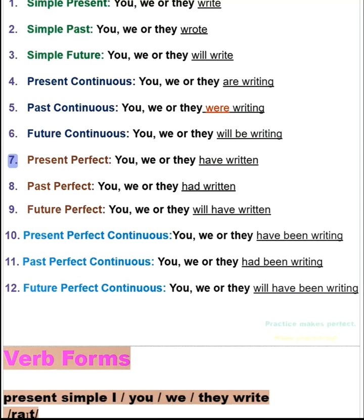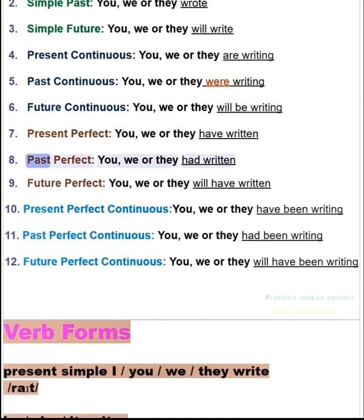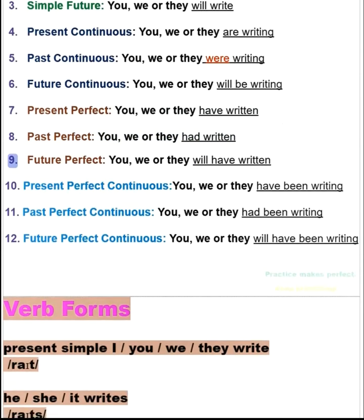7. Present perfect: you, we or they have written. 8. Past perfect: you, we or they had written. 9. Future perfect: you, we or they will have written.